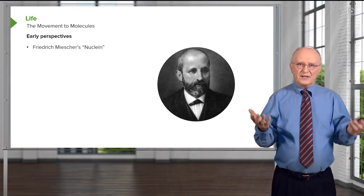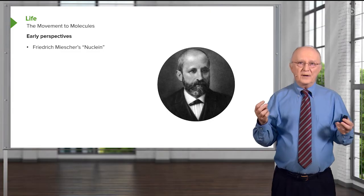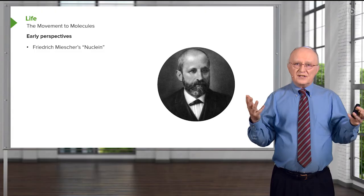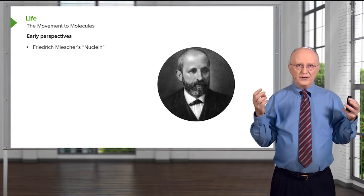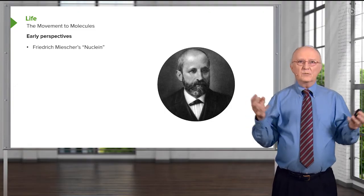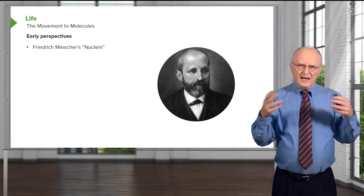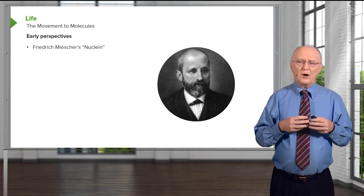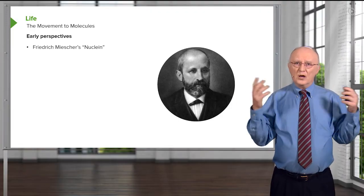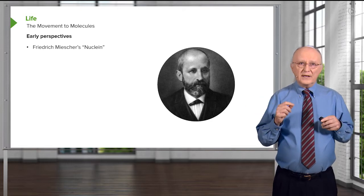By the 1850s, the discovery of the molecules important for the molecular basis of life came into being. Friedrich Miescher discovered a compound in the 1850s that he called nuclein. He was interested in studying proteins, but when he isolated nuclei of cells, he discovered they contained a substance with very unusual properties. He didn't know what those properties were, but he knew he had discovered something new and important. We know today, of course, that nuclein is DNA.